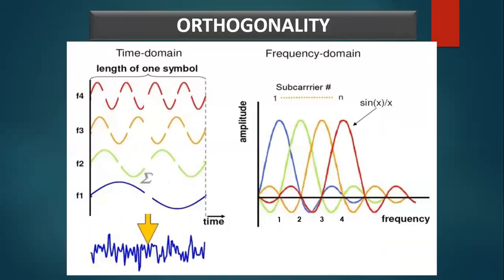Now coming to the important aspect of OFDM: orthogonality. As shown in the figure, in the time domain signal, the waveform in blue has a frequency of 1 Hz. Similarly, the waveform in green has a frequency of 2 Hz, and so on, so that these signals have a frequency difference of 1 Hz from neighboring sub-carriers.